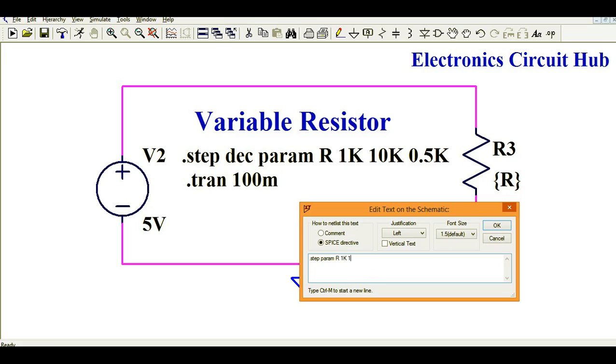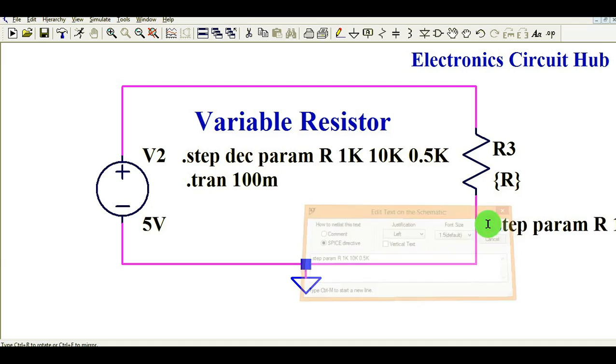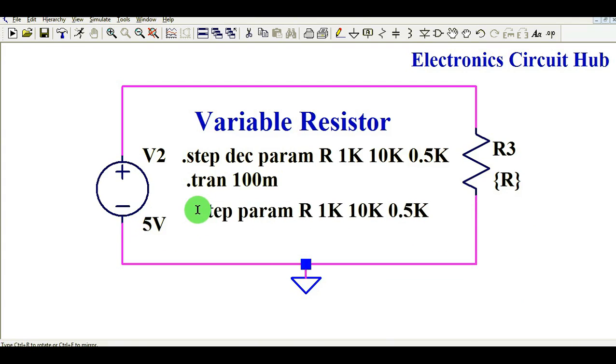Your final value is 10K, and with the step of 0.5K. And after writing this, you are done with changing the resistance value.